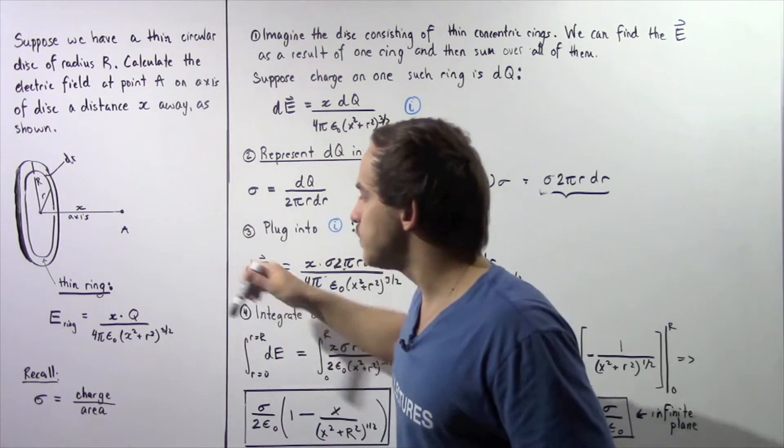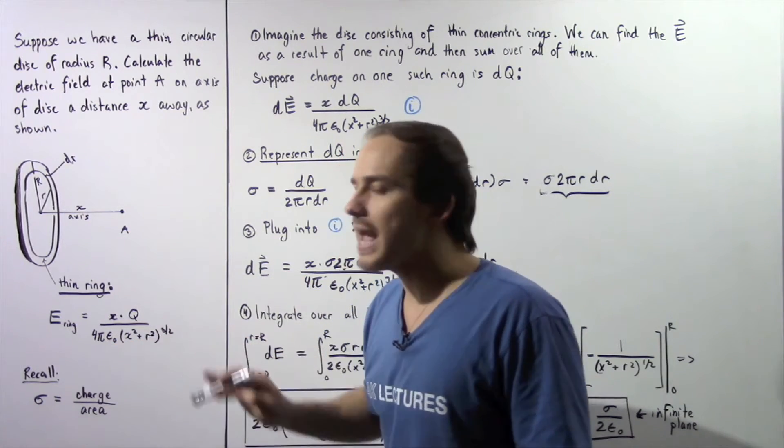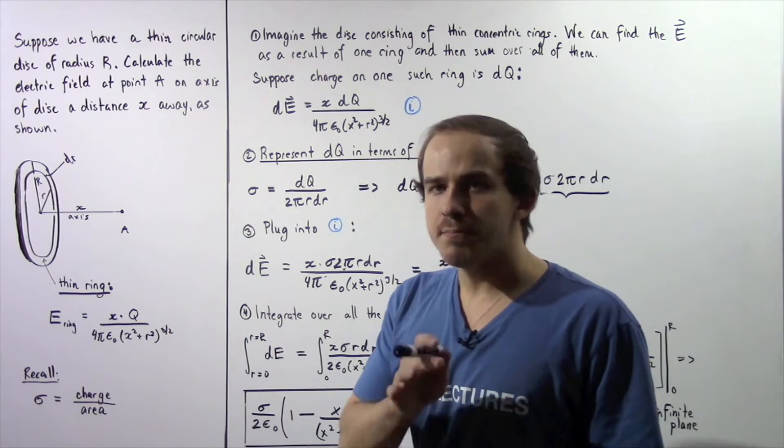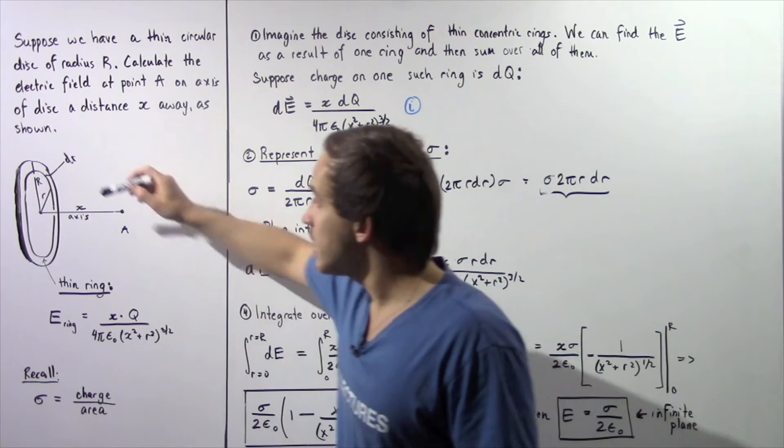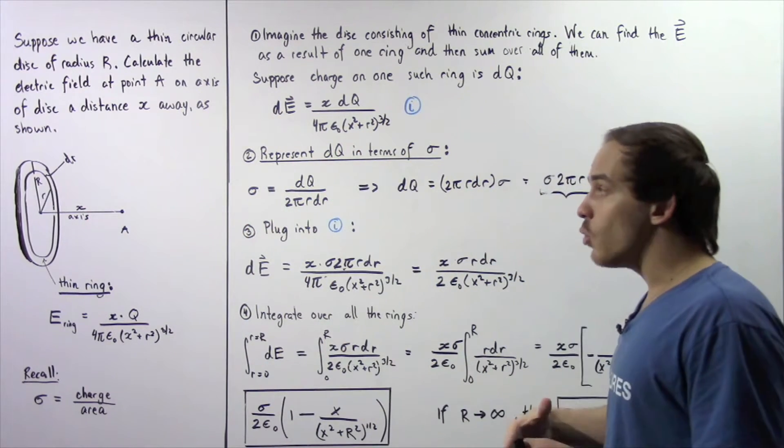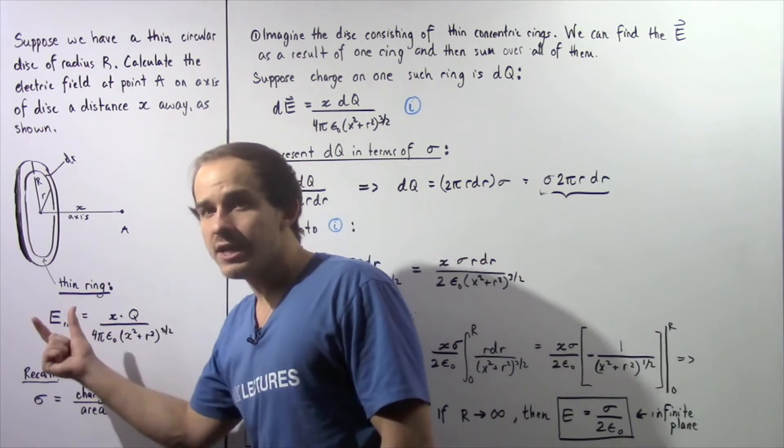x, the distance, multiplied by Q, the charge on the ring, divided by 4 pi epsilon naught, multiplied by x squared plus R squared raised to the power of 3 divided by 2. Where R, the lowercase r, is the radius of that particular thin ring.